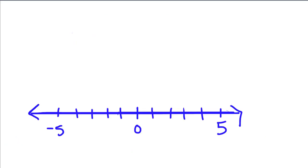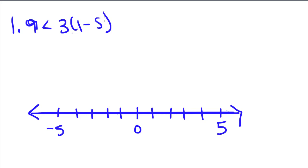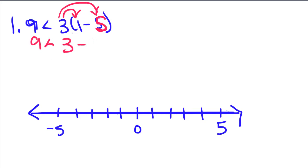Now let's do an example: 9 is less than 3 times the quantity of 1 minus s. First thing we're going to do is distribute that 3: 9 is less than 3 minus 3s.